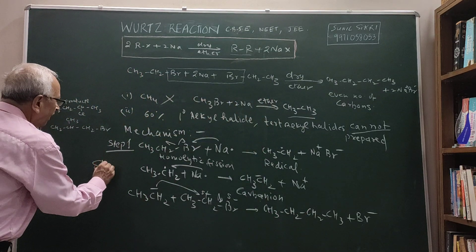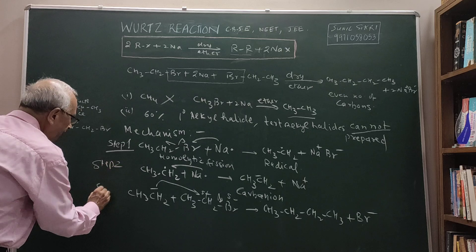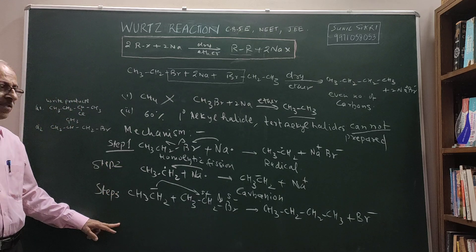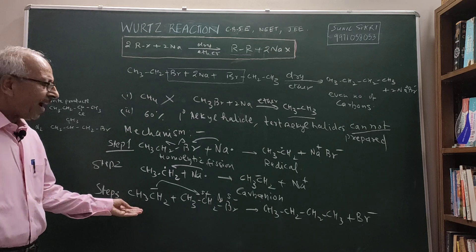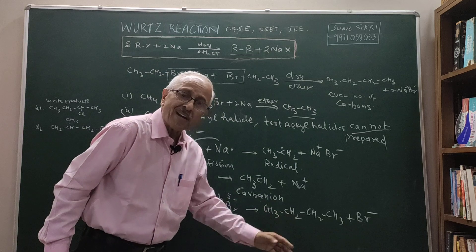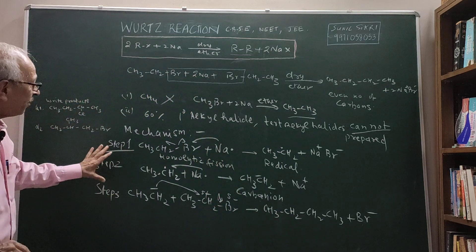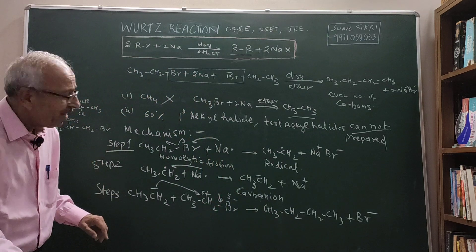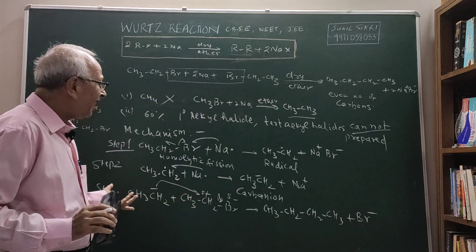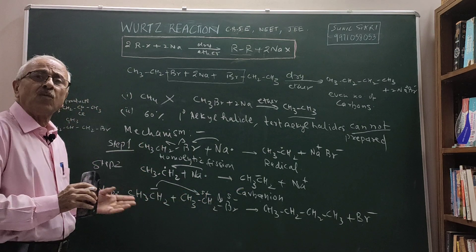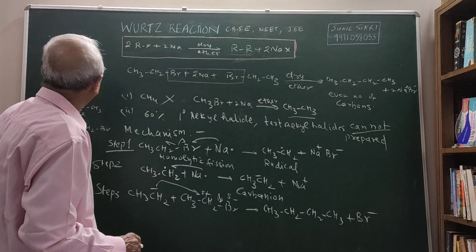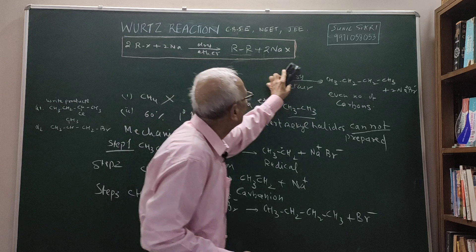So, the mechanism of this reaction involves three steps: radical formation, carbanion formation, and then nucleophilic attack on the carbon of the alkyl halide. Because there are radicals involved, there will be some additional byproducts. And in the case of tertiary alkyl halides, elimination possibilities are there. Therefore, tertiary alkyl halides are not used in this type of reaction.